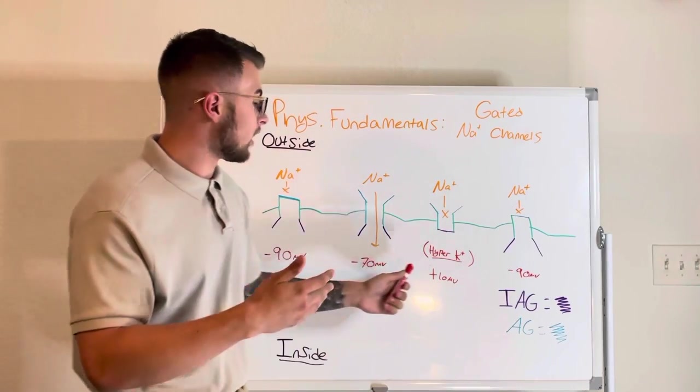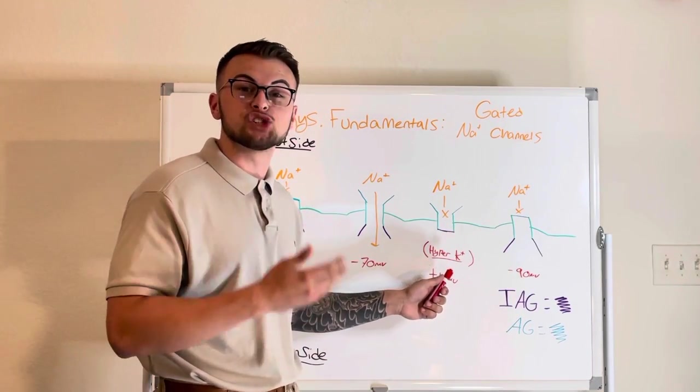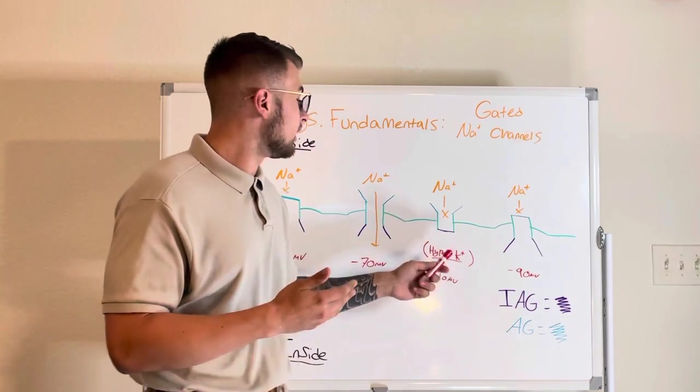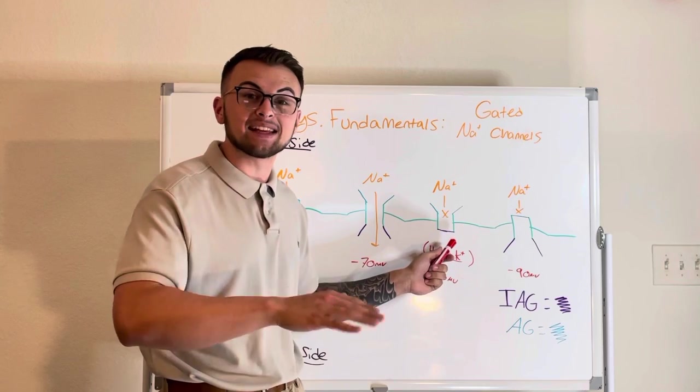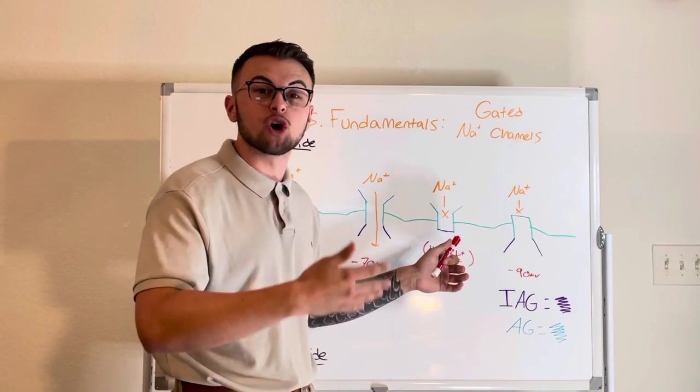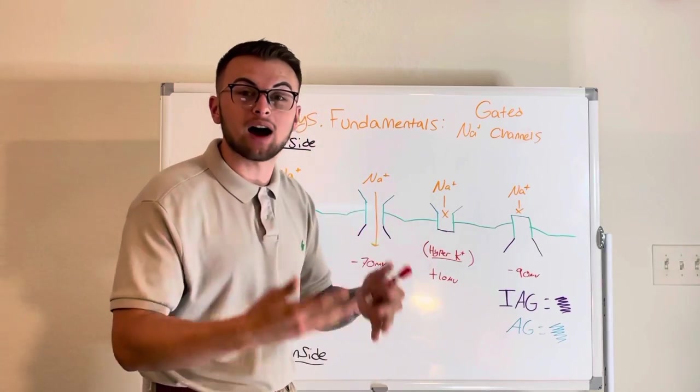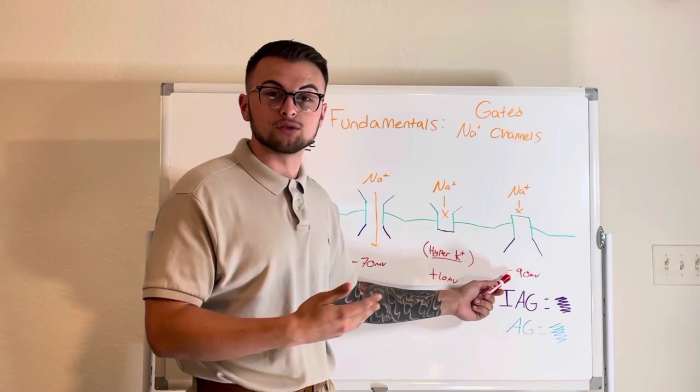However, at around positive 10 millivolts, the IAG brother does his job and shuts the IAG gate, which stops any sodium from coming in. Our cell slowly becomes less positive until we reach our original negative 90 millivolts.